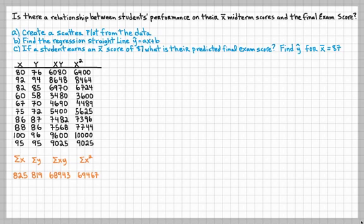We want to know the sums of each of the columns. The sum of x is 825, the sum of y is 819, the sum of xy is 68,943, and the sum of x squared is 69,467. These numbers are very important because this is going to help us in substituting into our formula. We need ŷ = ax + b. We're going to need a and b. We need to calculate that.